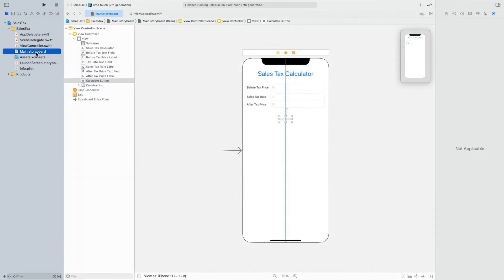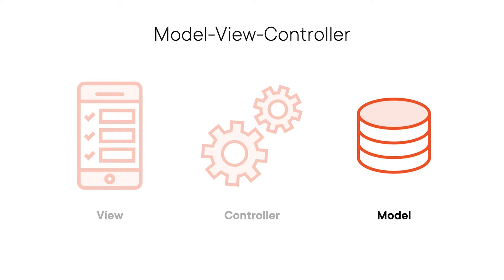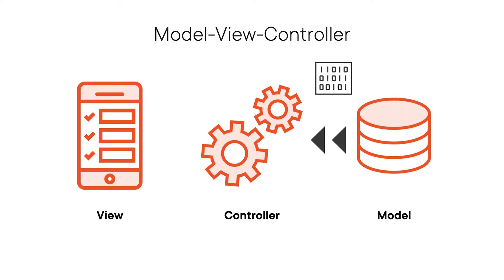Let's click on the main storyboard. This will open up the storyboard editor. The document outline panel shows all the View elements included in the ViewController. The model in the MVC pattern represents the application's data and the business logic. Although our basic application doesn't have a model, real-world apps usually require some data and a way to retrieve or modify that data. The data flows between the View and the model through the controller. The controller may convert the model data to the format expected by the View, and similarly, the information coming from the View may need to be converted to a format compatible with the model. Suppose the model stores JPEG images as binary data. The controller will turn the binary data into UIImage instances, which in turn can be displayed using an image view.